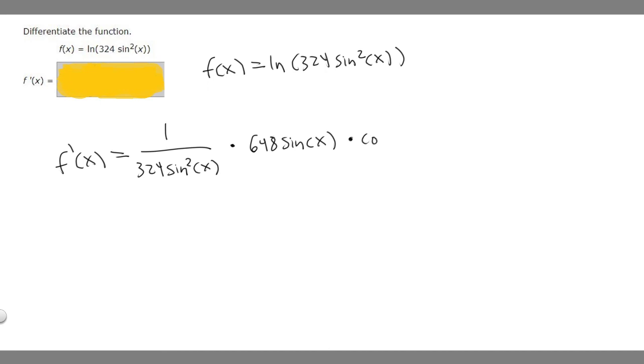And so now that we have that we have our answers. So f prime of x is equal to 1 over 324 times the sine squared of x times 648 times the sine of x times cosine of x. And now you can simplify this more but this answer will work for you. And so this is going to be the answer to this problem.